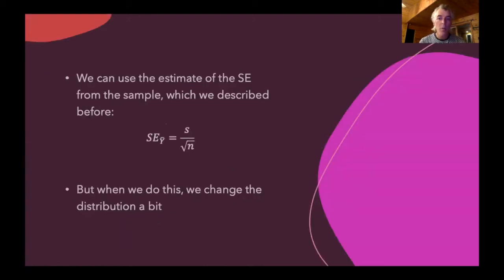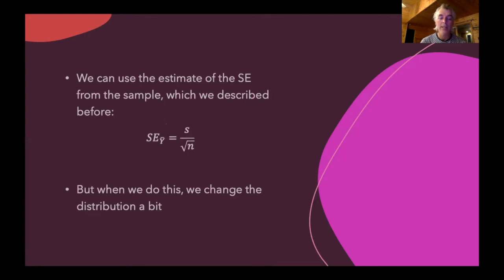One way around this is that we can use the standard error from the sample as an estimate of our standard deviation of the sampling distribution, just like we've talked about in the past. We can calculate this standard error of the sample mean as the standard deviation of the sample divided by the square root of n.